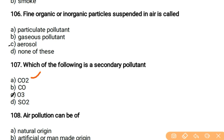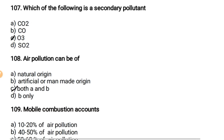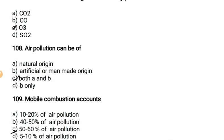Which of the following is a secondary pollutant? Carbon dioxide is a primary pollutant. Carbon monoxide is also a primary pollutant. O3, ozone, is a secondary pollutant — so O3 is the right answer. Air pollution can be of natural origin or artificial, manmade origin — both are correct, so C is the right answer.